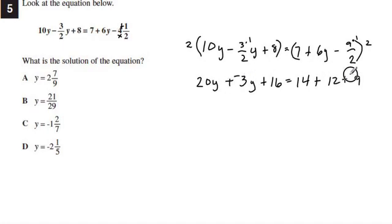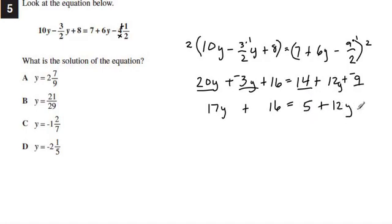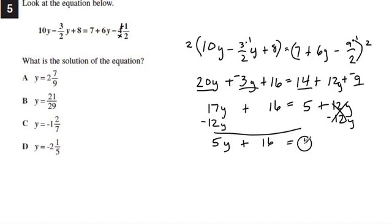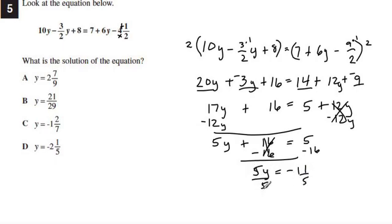Now we use same-change-switch and combine like terms: 20y minus 3y is 17y plus 16 on the left; 14 minus 9 is 5 plus 12y on the right. There are variables on both sides, so move 12y left by subtracting: that leaves 5y plus 16 equals 5. Subtract 16 from both sides: 5y equals negative 11. Divide by 5: y equals negative 11 fifths. Converting to mixed number form: negative 2 and one-fifth, which is letter D.